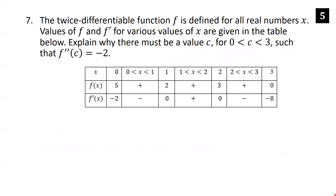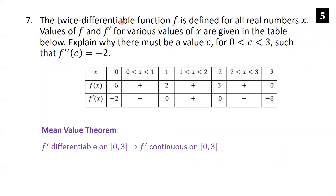The twice differentiable function f is defined for all real numbers. Values of f and f prime for various x are given in a table. Explain why there must be a value c between 0 and 3 such that f double prime of c equals negative 2. This is a Mean Value Theorem problem, but this time we apply it to f prime. Since f is twice differentiable, f prime is differentiable — and differentiability implies continuity — so f prime is continuous on [0, 3].